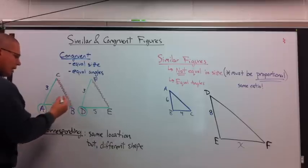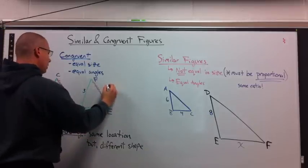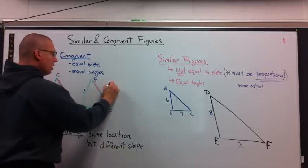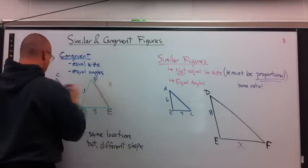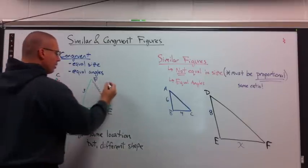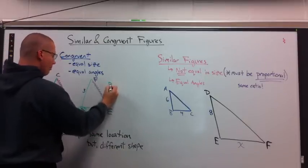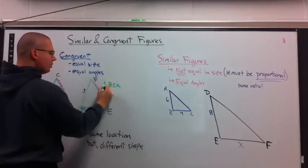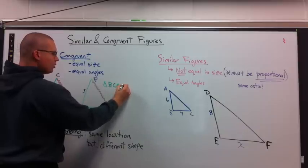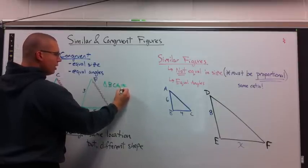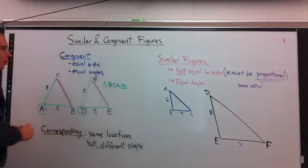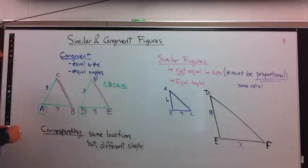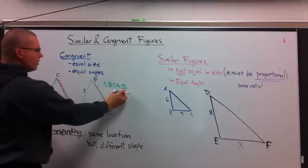So, let's try one real quick. What is corresponding to BCA? Triangle BCA. Corresponding, we are going to put a wavy equal sign with a straight line underneath. That is the congruent symbol.